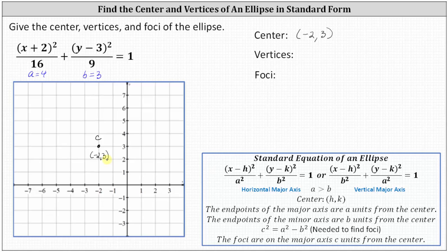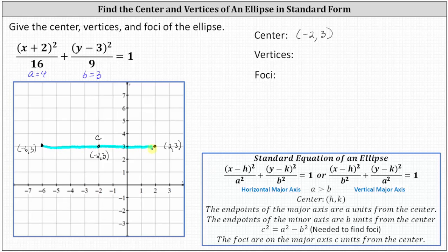Let's plot this on the coordinate plane. Because we have a horizontal major axis, and the endpoints of the major axis are a units from the center, and a is equal to four, we add and subtract four to the x-coordinate of the center, which is negative two. Negative two plus four is positive two, so two comma three is the right endpoint of the major axis. Negative two minus four is negative six, so negative six comma three is the left endpoint of the major axis. These are two of the vertices. The major axis is always two a units in length.